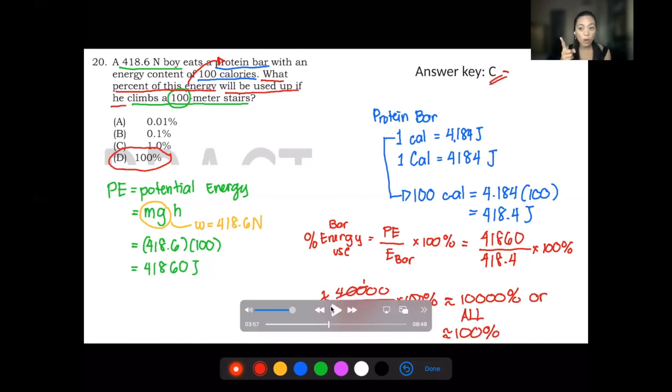The answer key only has 1%, letter C answer. So we've discussed that this is a wrong answer. C is not an answer. The boy consumed all the bar's energy, and that should be 100% or more than 100%.